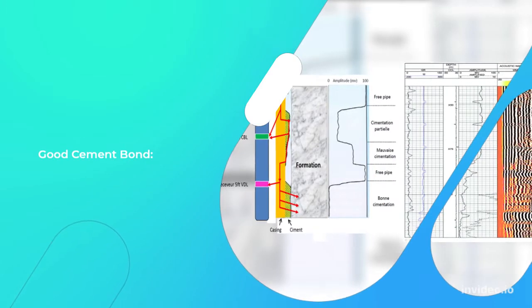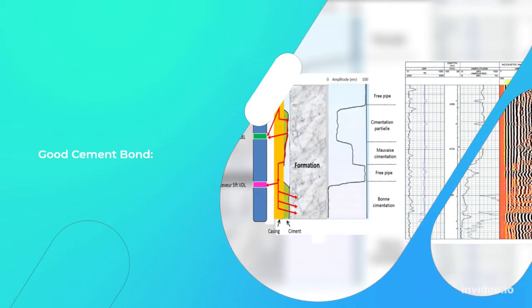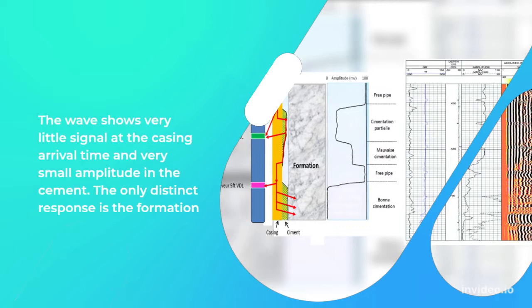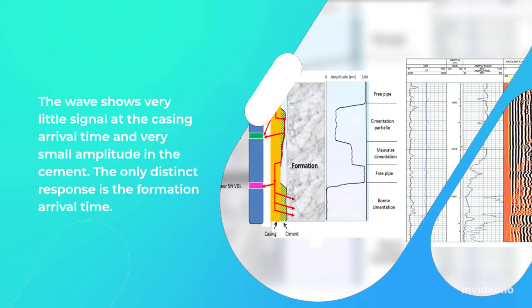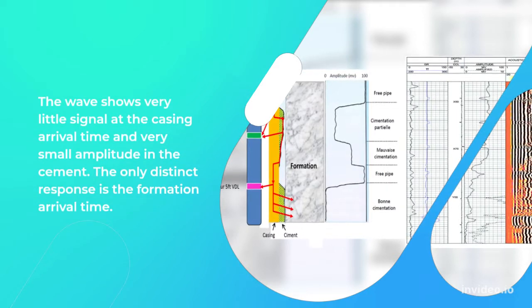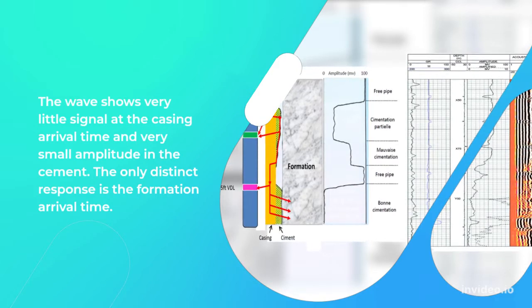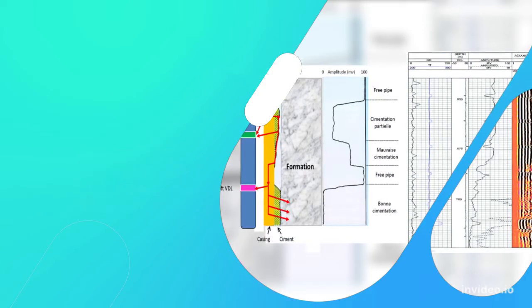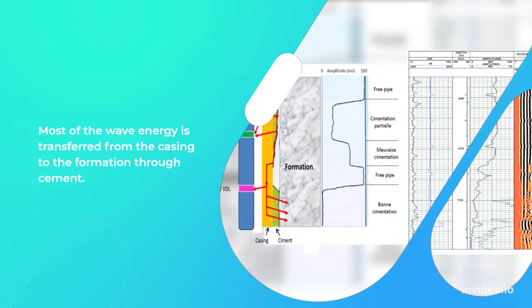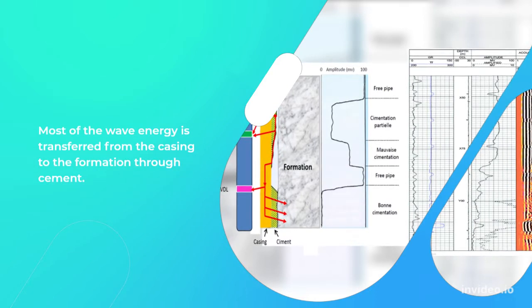Good cement bond: The wave shows very little signal at the casing arrival time and very small amplitude in the cement. The only distinct response is the formation arrival time. Most of the wave energy is transferred from the casing to the formation through cement.